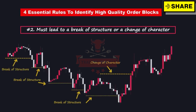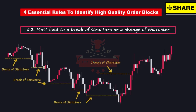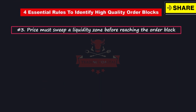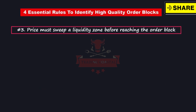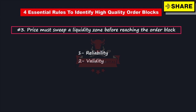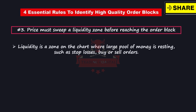Rule number two emphasizes that a high-quality order block must lead to a break of structure or a change of character in the market. Break of structure and change of character are essential signals that indicate whether the market will continue in its initial direction or will experience a reversal. Rule number three: price must sweep a liquidity zone before reaching the order block. Liquidity is a zone on the chart where a large pool of money is resting, such as stop-losses and buy or sell orders. When a trader gets stopped out of a position, the market absorbs the funds associated with that stop-loss.